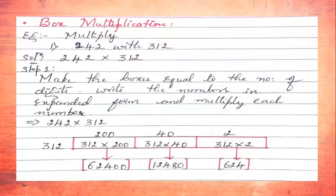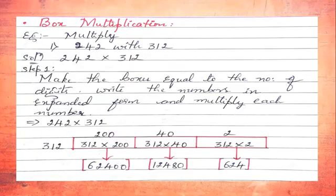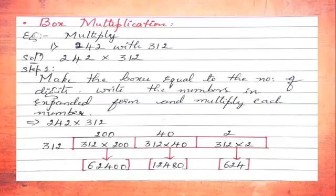Next we go to box multiplication. We have done column multiplication; now it is box multiplication. Example: multiply 242 × 312. Step one: make a box equal to the number of digits. Write the numbers in expanded form and multiply each number.